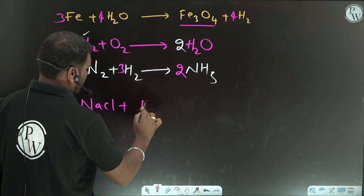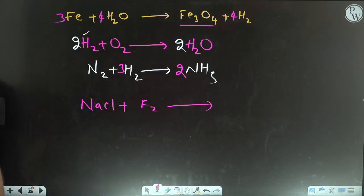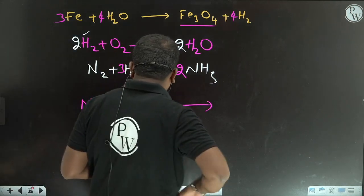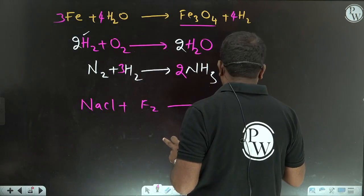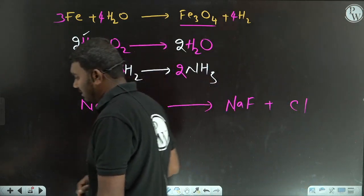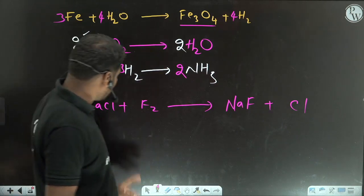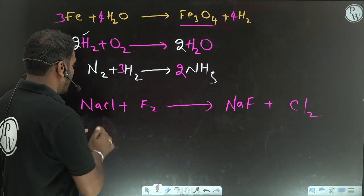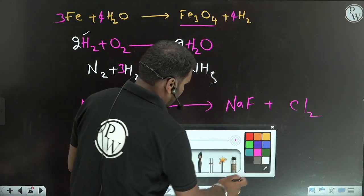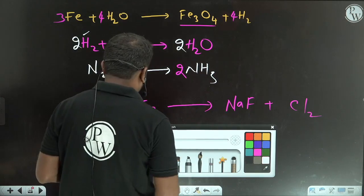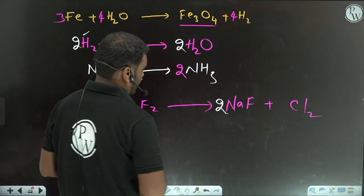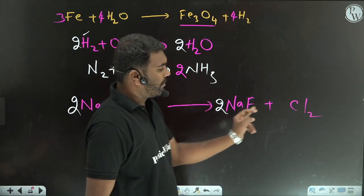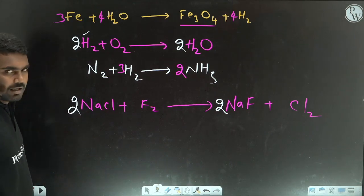Another example: NaCl plus F2. Here sodium chloride reacts with fluorine. Chlorine is replaced by fluorine, giving NaF plus Cl2. NaCl and NaF have equal sodium atoms, so sodium is balanced. F2 has 2 fluorine atoms, so we multiply by 2 to get 2NaCl plus F2 gives 2NaF plus Cl2. The equation is balanced.